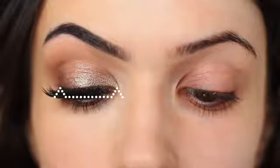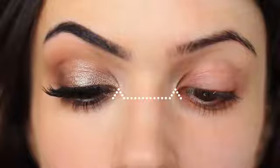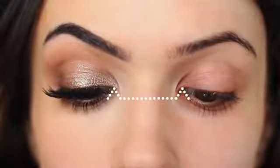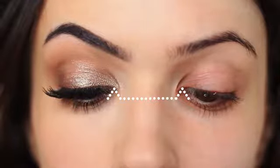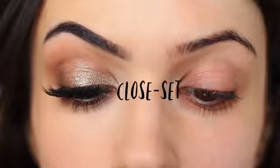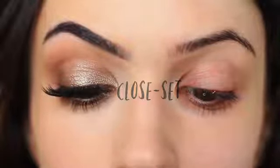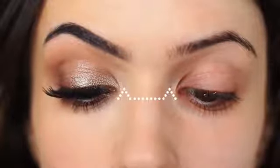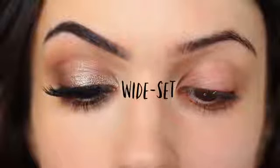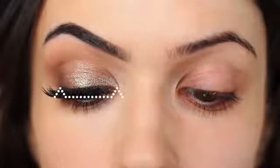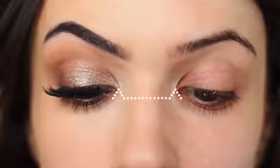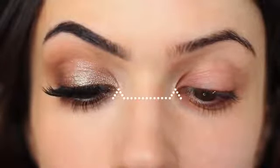We took the measurement of one eye using our thumb and index finger and placed that measurement in the middle of the eye to see where it landed. If you found you were poking yourself in the eye, the chances are you have close set eyes — meaning your eyes are set closer together. If you found that you had room on either side, the chances are you have wide set eyes. And if it fits quite snugly in the middle, then the chances are you have an average eye spacing.